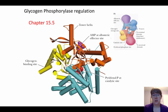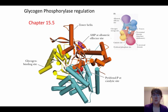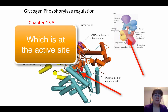While breaking down digestive starch and digestive glycogen is not regulated, breaking down storage glycogen that the body makes is highly regulated. That regulation comes from glycogen phosphorylase. This enzyme has a glycogen binding site as well as a site for pyridoxal phosphate, which is a cofactor used for catalysis.